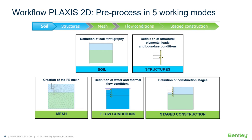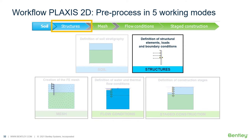The Plexus 2D workflow in Plexus input consists of 5 steps. We define the soil layers in soil mode, then we go to Structures mode to define structural elements, loads and boundary conditions. Then in the mesh mode we first generate the finite element mesh, then flow conditions mode, and finally stage construction to set up the different phases we want to analyze. Here we are going to talk about the Structures mode, continuing where we left off from the previous session after creating our soils.